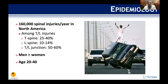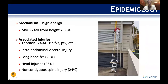As far as epidemiology, there are about 160,000 spinal injuries in North America per year. Looking at thoracolumbar injuries, the vast majority are in that junction area — up to 50% — followed by the T-spine and L-spine. Like most trauma, men outweigh women and it's usually a disease of the younger population, with a bimodal distribution as people get older. Mechanisms are typically high energy: motor vehicle collision or fall from height, which accounts for about 60 to 70 percent of these injuries.